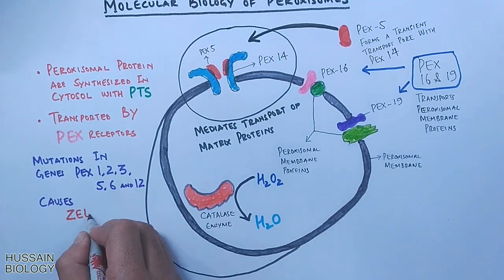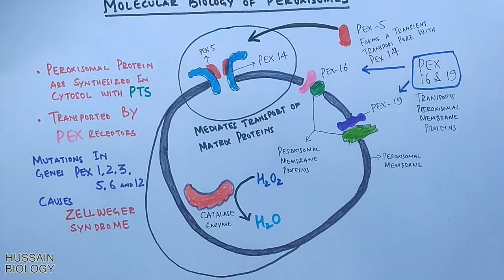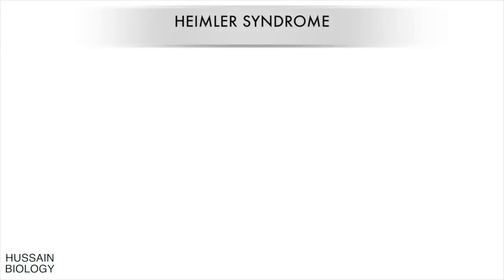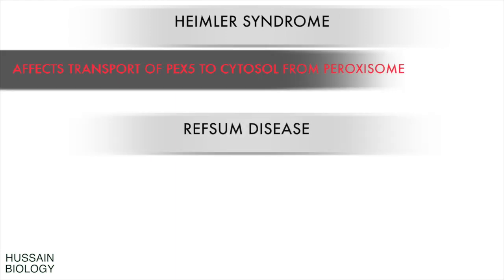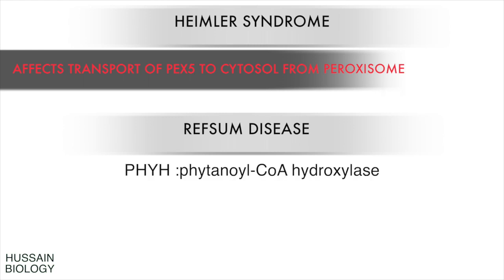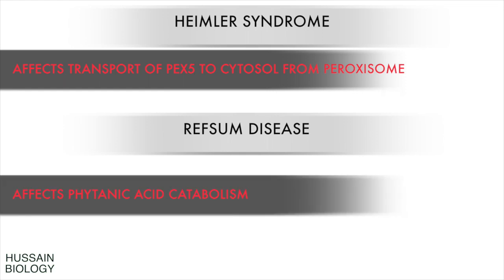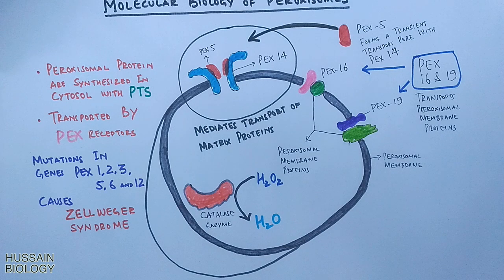The second syndrome is Heimler syndrome, which is caused by mutations of PEX1 and PEX6 genes and affects the transport of signal receptor protein PEX5. Finally, there is Refsum disease, caused by mutations of the PHYH gene. Refsum disease is associated with deficient phytanic acid catabolism, which results in the accumulation of fatty acids in the cells, leading to this disorder.